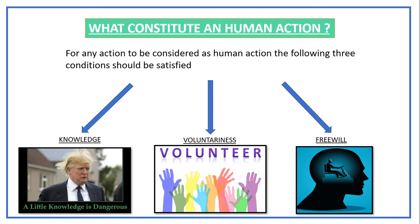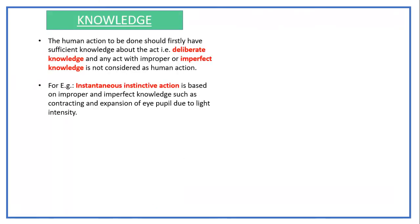The first criterion is knowledge. For an action to be considered a human action, you should have sufficient knowledge of what you are doing. For example, you know you are supposed to stay home, yet you go outside — that action is ethical or unethical? If you do not have knowledge of something, it cannot be considered ethical or unethical. Only when you have the knowledge and act on it is it considered a human action.